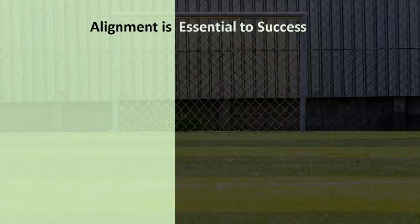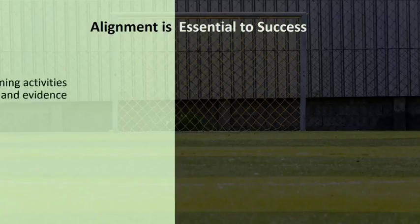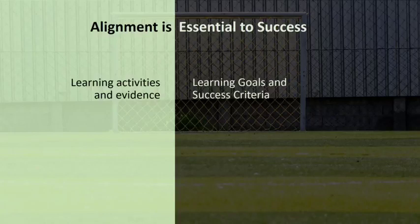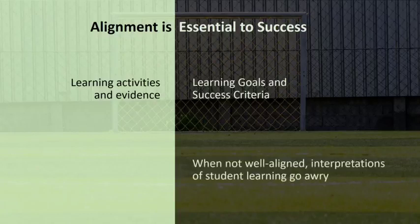Just as the alignment of assessment with learning goals is a central principle in more formal testing and assessment, it is also essential for formative assessment. Even if teachers are clear about where their students are going, they are not likely to be effective in getting students there unless lesson learning activities and the evidence they produce are well aligned with lesson learning goals and success criteria. Alignment is essential for the culminating activity for the lesson, where teachers will be able to fully assess students' achievement of the learning goal against the final success criterion. When evidence gathering is not well aligned with the lesson goal, teachers' interpretations of where students are and where they need to go next are likely to go awry.